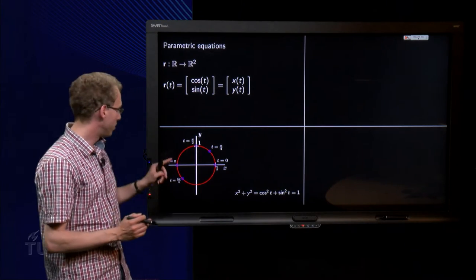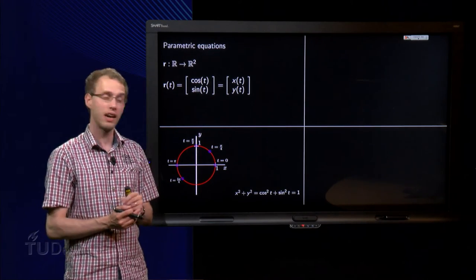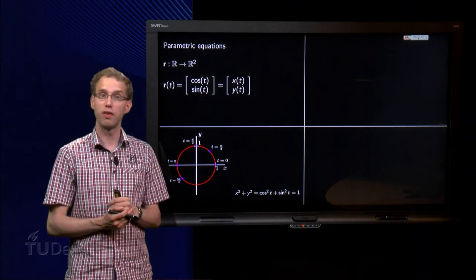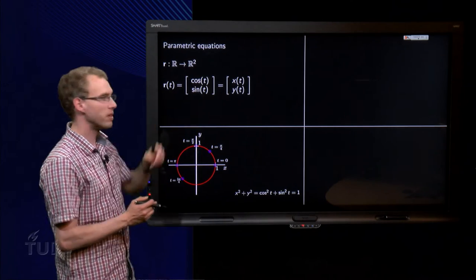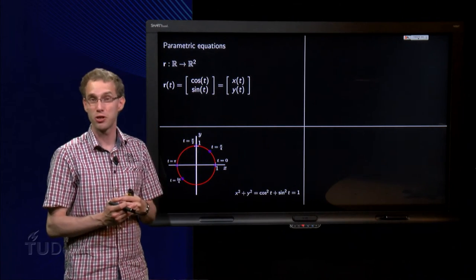And if we continue, we see for t equals π, we are over here. For t equals 5π/4, we are over here. And now you see what it looks like: all those points on this parametric curve seem to lie on a circle.